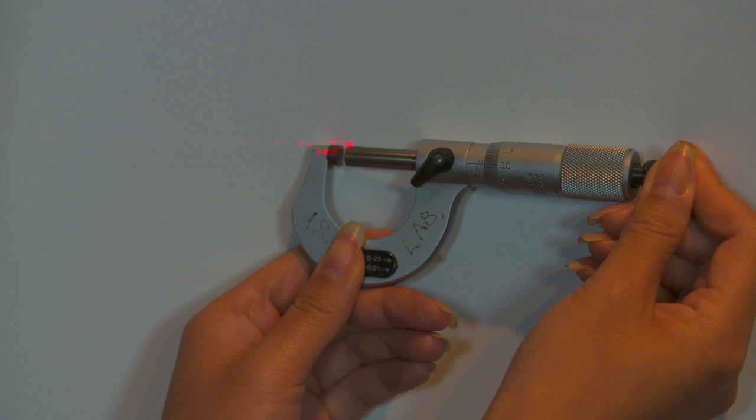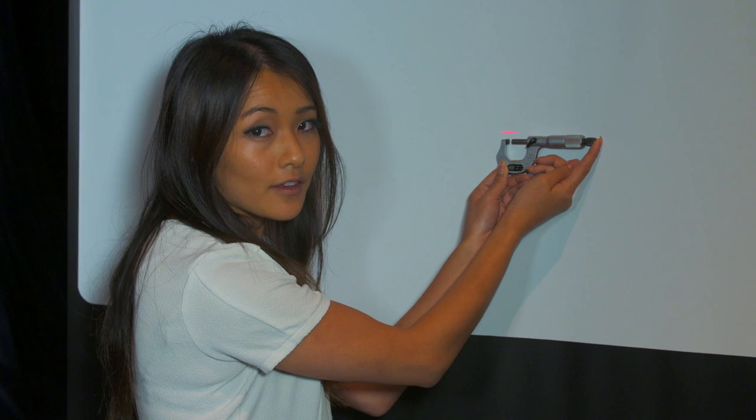If we double the distance to 2 metres, you can see that the fringe separation has also doubled.